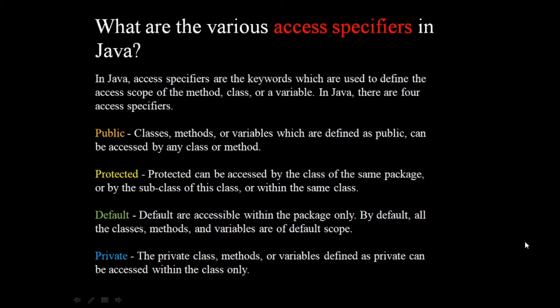Coming on to the last access specifier, which is private. Private classes, methods, or variables can be accessed within the class only. Whenever we declare or define a class, method, or variable as private, its scope is within the class only — it cannot be used outside the class.